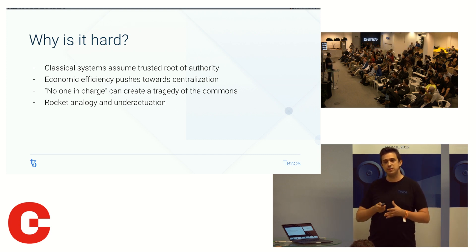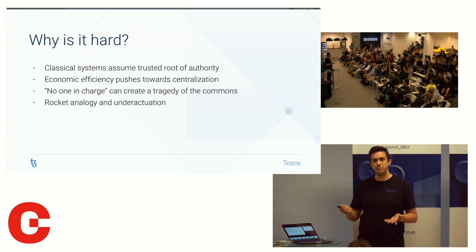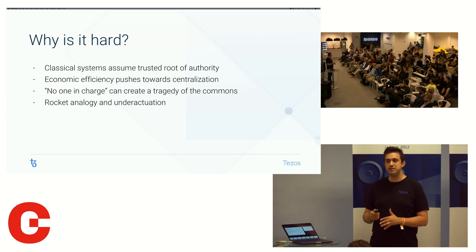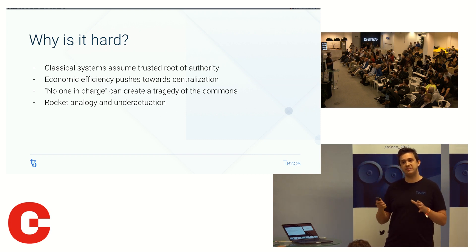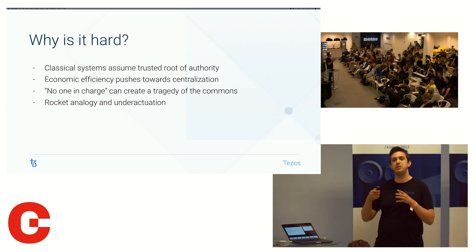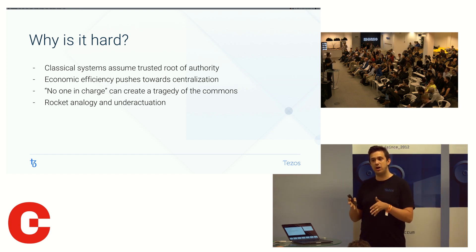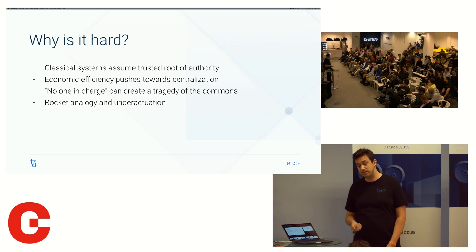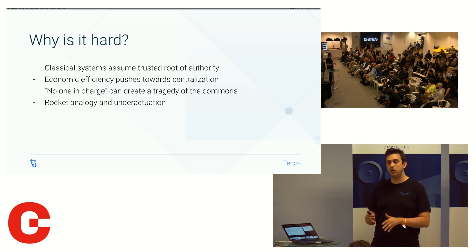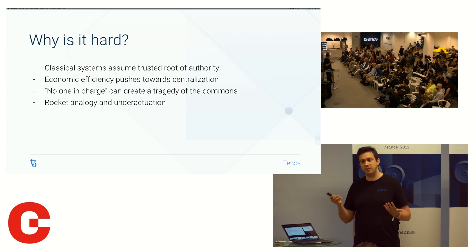In order to have censorship resistance, you need some decentralization — you shouldn't have a party that becomes so big they can censor or control the network. The problem is that economic incentives generally push towards centralization, because centralization is cheaper. The person who runs a server for the cheapest price, who has the most expertise — they have the lowest cost, so they're going to end up doing all of it. You see it even in decentralized systems like Bitcoin: most mining happens wherever electricity is cheapest. So economic incentives drive towards centralization, and keeping your system decentralized is basically an uphill battle.